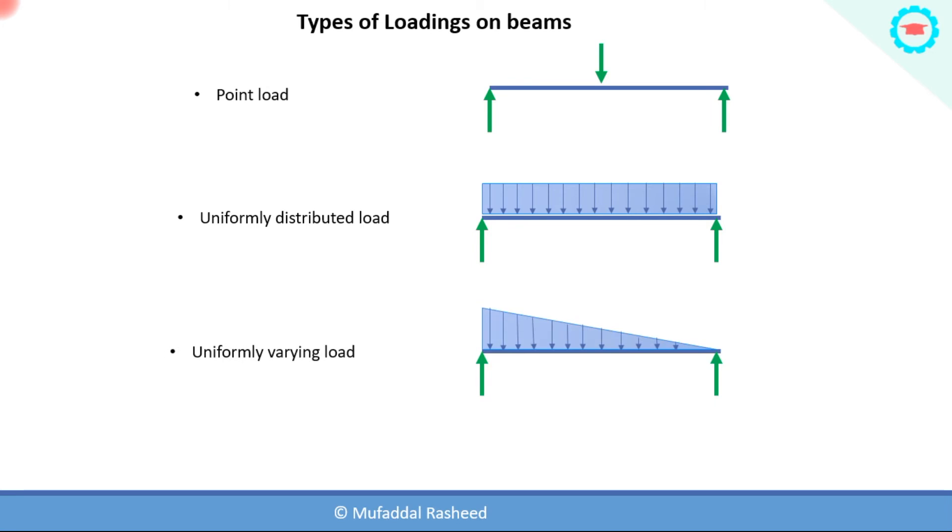The next type of load is called the uniformly varying load, which has a triangular profile in the loading. Uniformly distributed loads have a rectangular profile, while uniformly varying loads have a triangular profile.